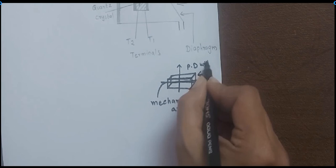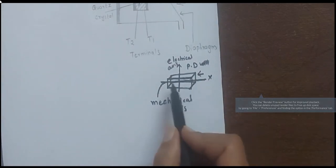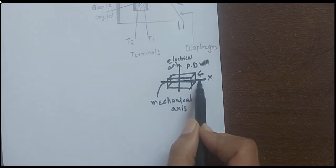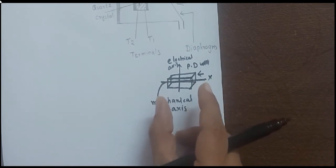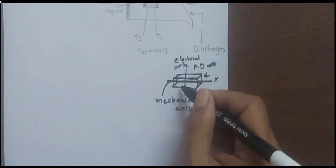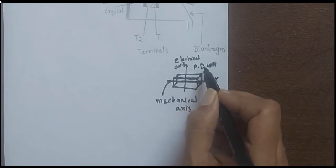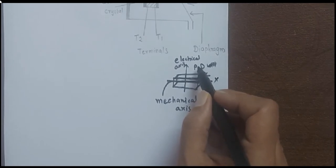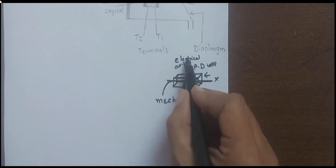Not all crystals show this property — only particular crystals like quartz, barium titanate, tourmaline, etc. If we take such a crystal and apply compression and expansion along the mechanical axis — that is, make it vibrate — the perpendicular faces will generate a potential difference, creating an EMF. The axis where this potential difference is generated is called the electrical axis.